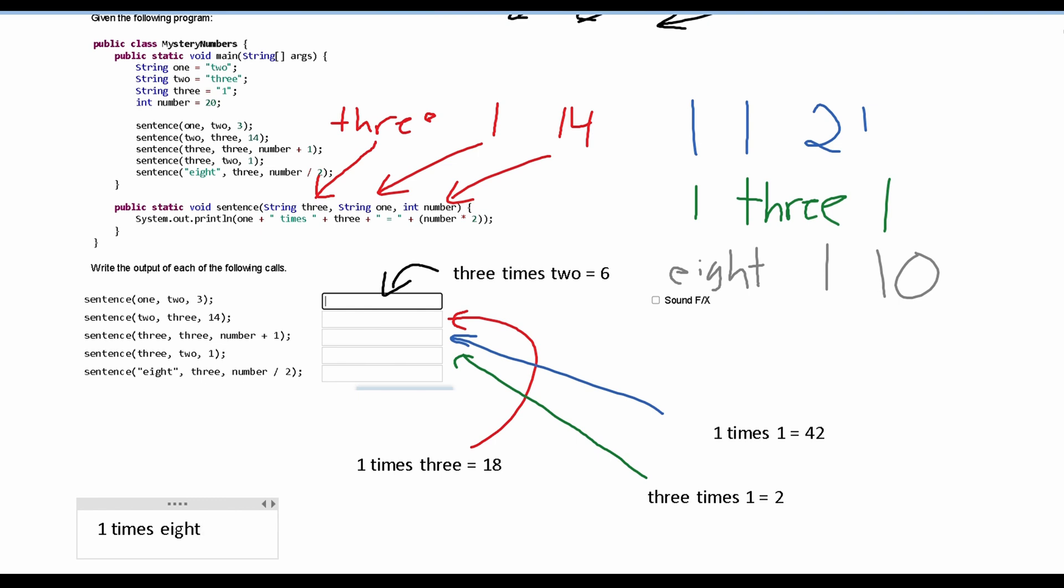And then we have an equal sign, and then we have number times 2, which is 10 times 2, so we will have 20 here. And this is going to go here. So these are our answers and that is how we solve this practice problem.